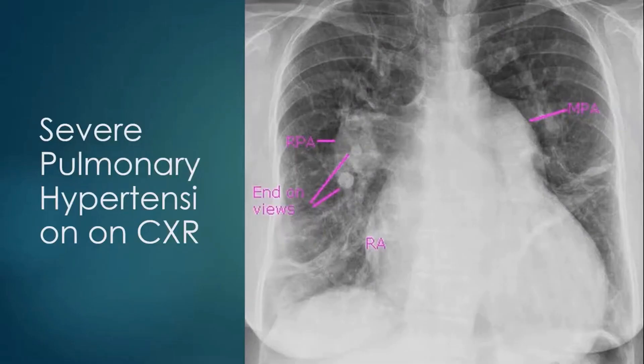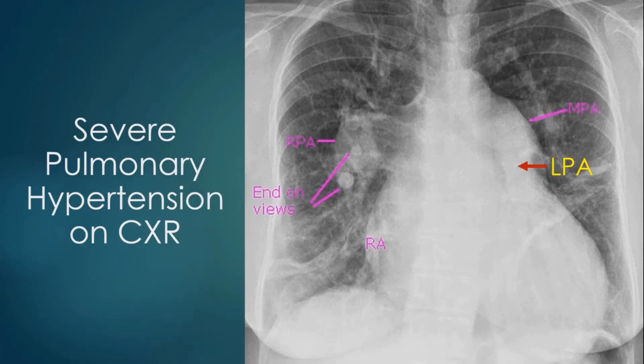Chest X-ray PA view showing features of severe pulmonary hypertension. There is mild cardiac enlargement with prominence of the right atrial contour, extending more to the right than usual. The main pulmonary artery is prominent, and the left pulmonary artery can be seen descending within the left cardiac border, starting behind the main pulmonary artery. The right pulmonary artery is also dilated. End-on views of a few pulmonary arteries are also seen.